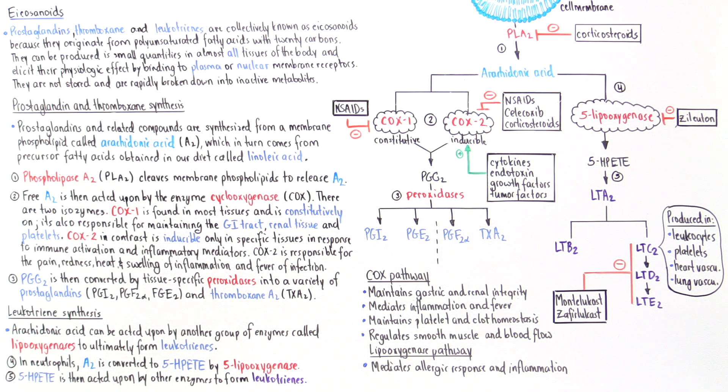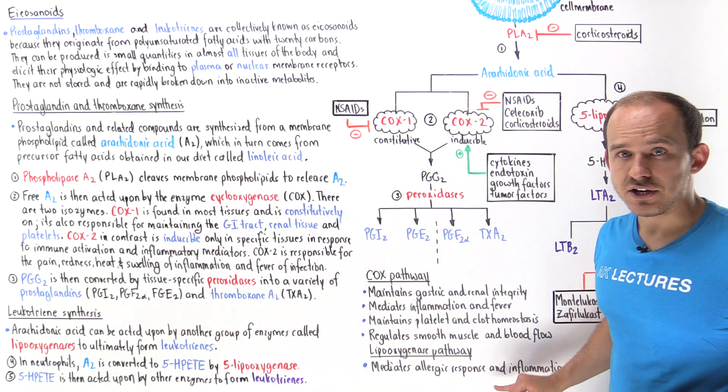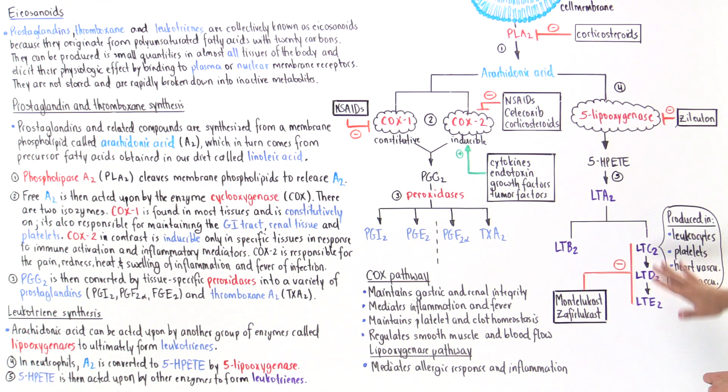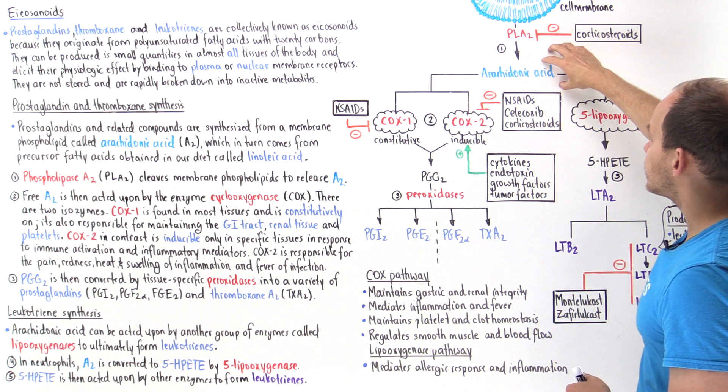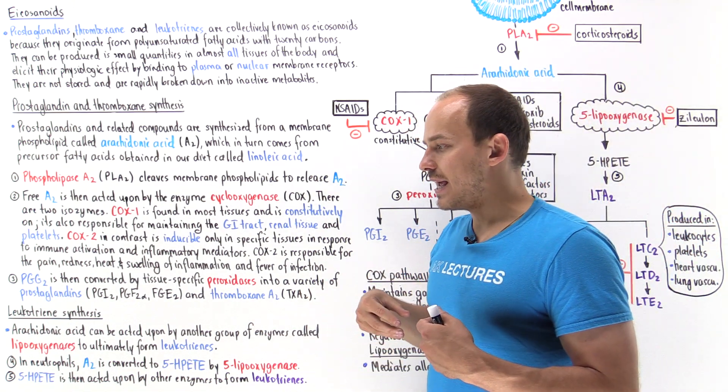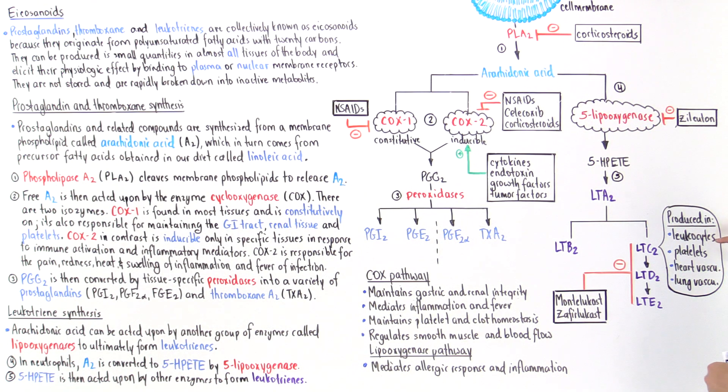We have this other pathway in which we form leukotrienes. This pathway takes place predominantly in places like white blood cells, mast cells, platelets, and heart and lung vasculature. This pathway is responsible for allergic reactions, allergic responses, and inflammation. For example, asthma patients, when they have an asthma exacerbation, will activate this pathway. We have medications that can block various places along the pathway.